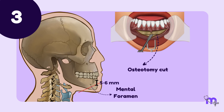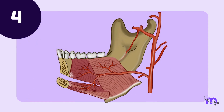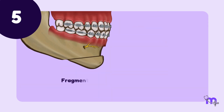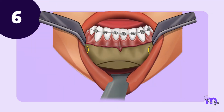This is done using a surgical saw or bone cutting burrs. Then, the lingual periosteal attachment is preserved to maintain the vascular supply. Next, the fragmented segment is moved to the desired position with or without bone grafts. Finally, fixation is usually done with bony plates and screws.